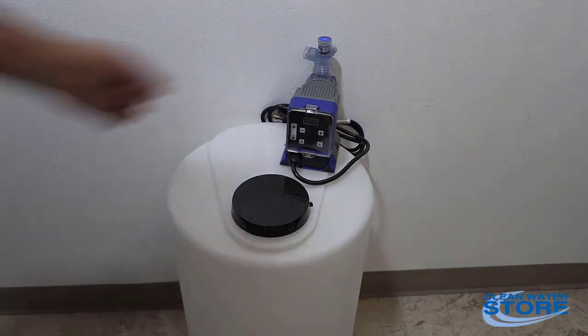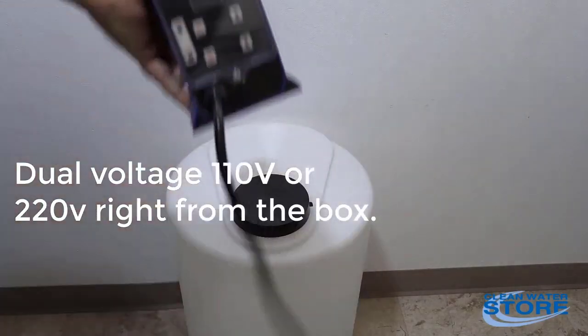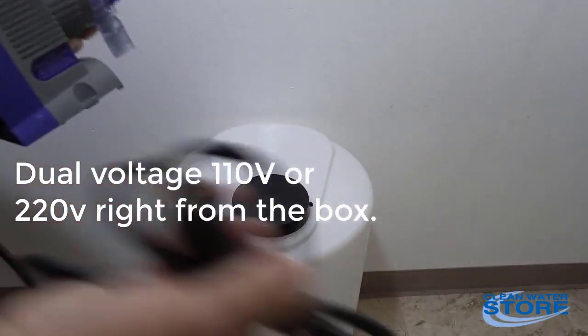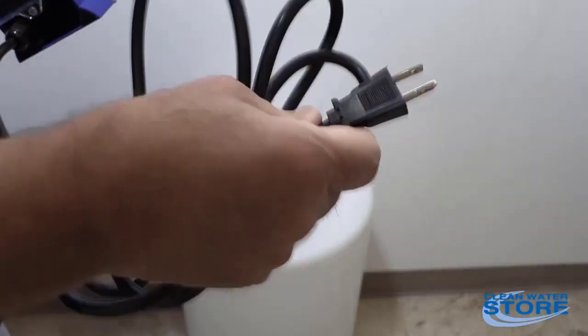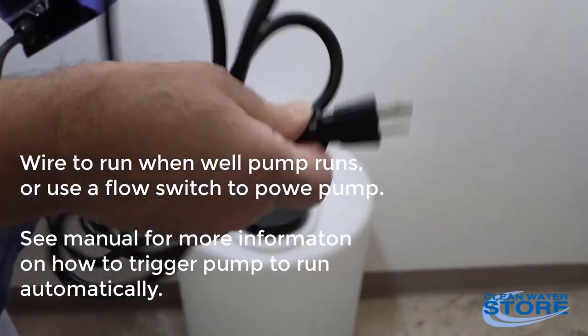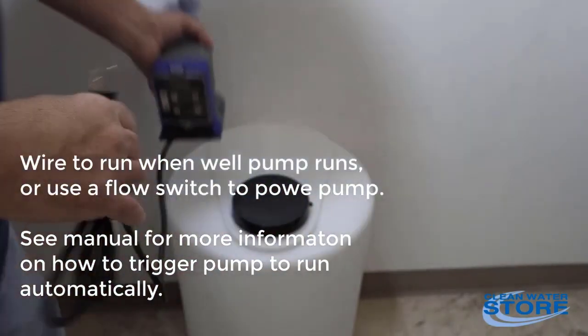So the system we're setting up today, these pumps will work off of 110 or 220 volts. They come with a 110 plug. If you're going to go 220, we recommend cutting the plug off, either putting a 220 plug in or hardwiring it directly into your well pump.